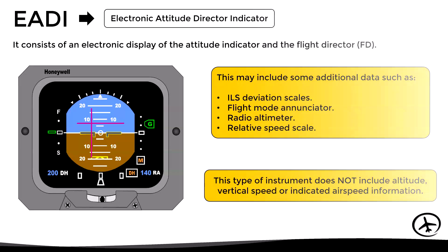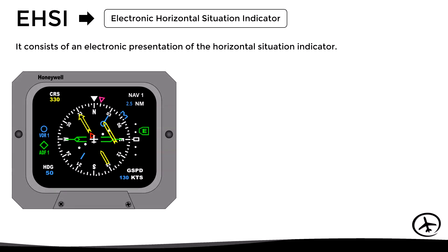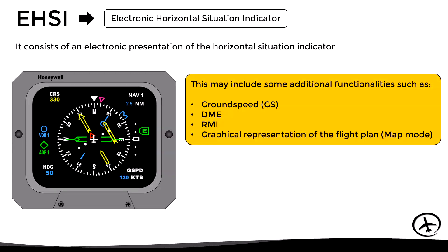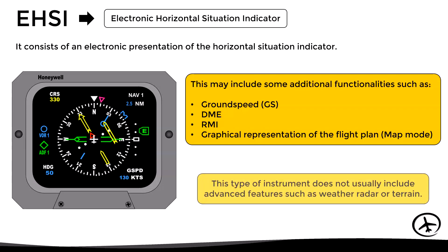The Electronic Horizontal Situation Indicator consists of an electronic presentation of the HSI. However, it may include some additional functionalities such as ground speed, DME, RMI, and even a graphical representation of the flight plan. This type of instrument does not usually include advanced features such as weather radar or terrain.